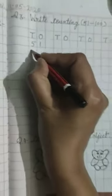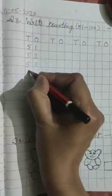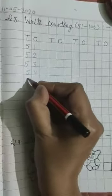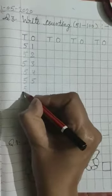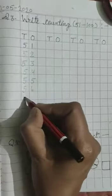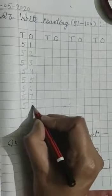51 to 100 counting. Right here. 52, 53, 54, 55, 56, 57. This way you have to complete.